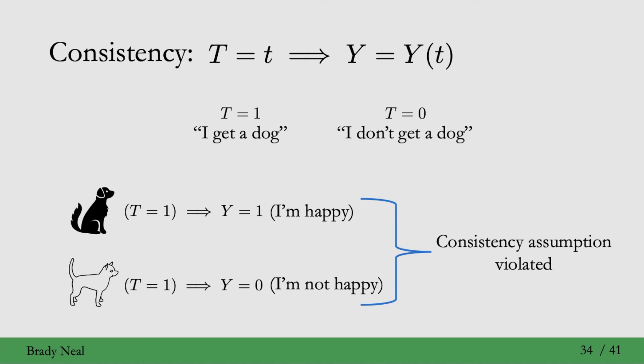Another phrase for violating this aspect of the consistency assumption is known as no multiple versions of treatment. So here we had multiple versions. We had a golden retriever and a chihuahua, or different versions of T equals 1.